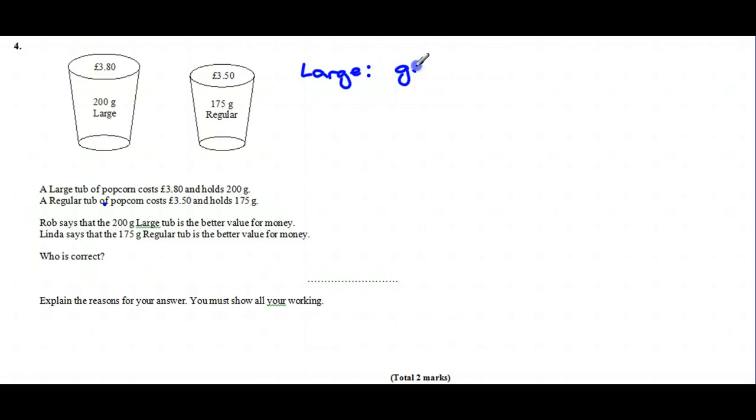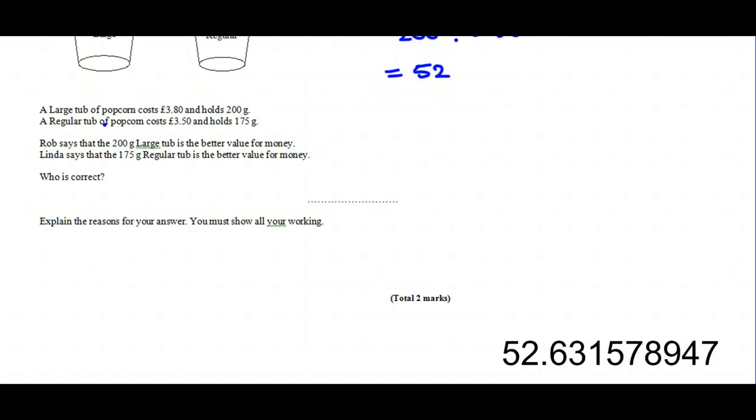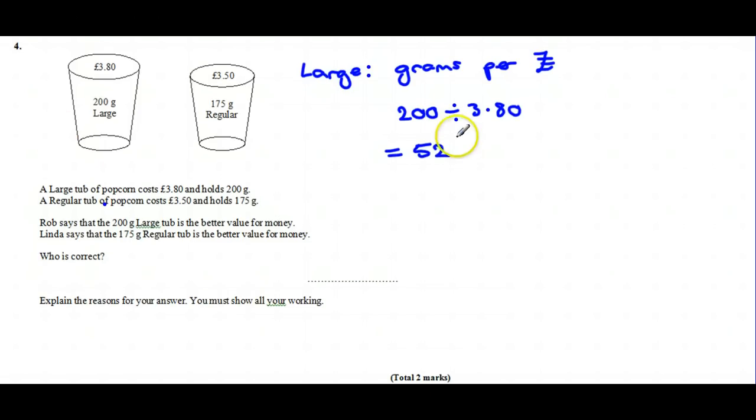Take the number of grams, which is 200, and divide that by how much you have to pay, which is £3.80. That comes out as 52.63159 grams per pound, and so on.